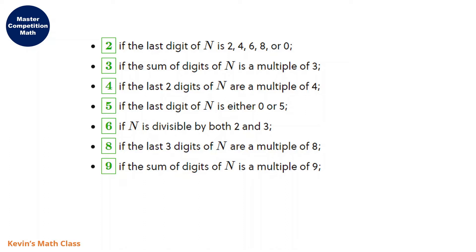For two, we know it's all even numbers. So basically the last digit is two, four, six, eight, or zero. This will be an even number that is divisible by two. Very easy.